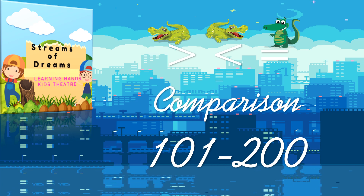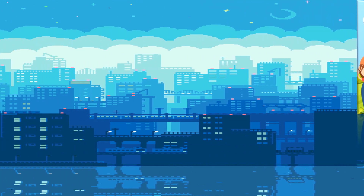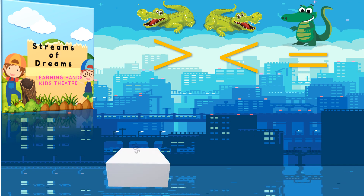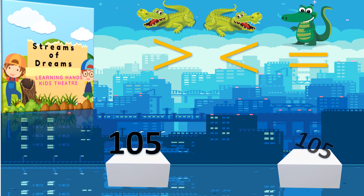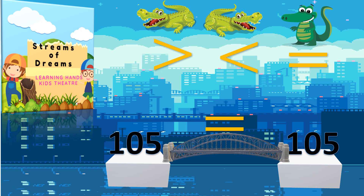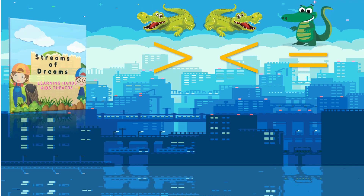We have to see the numbers on both sides properly. Here I am with my numbers: 105, and across the bridge I have 105 again. Which number is bigger? Very nice — both of them are equal!